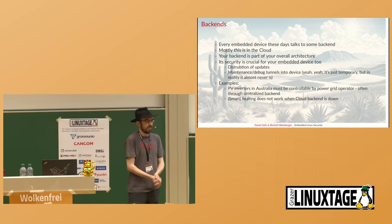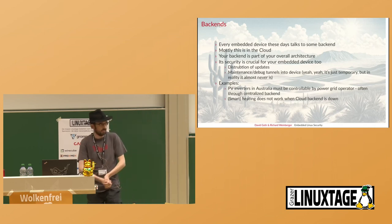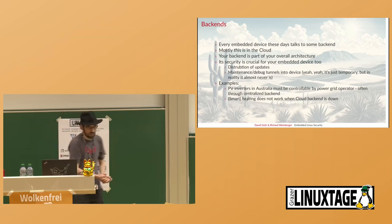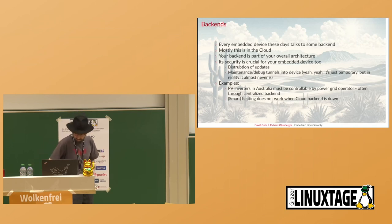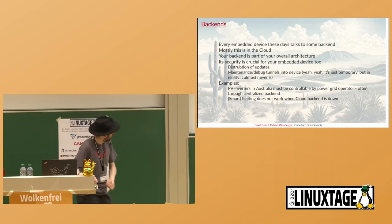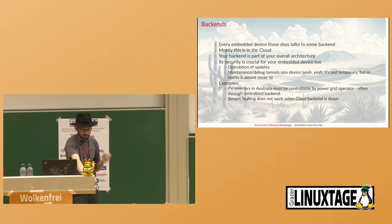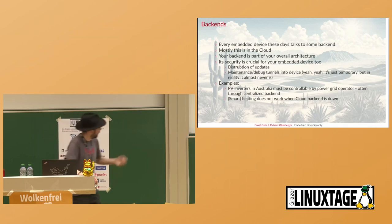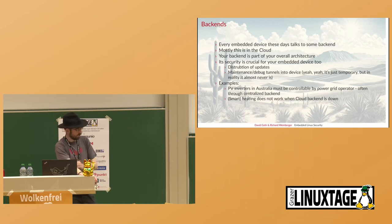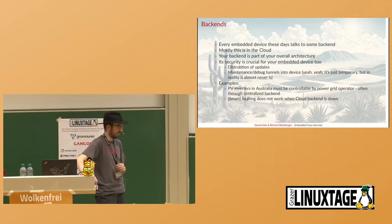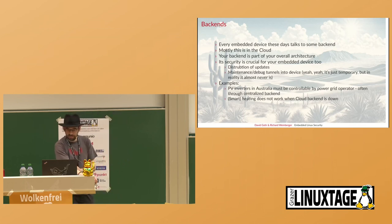Another thing is backends. These days almost every embedded device talks to a cloud backend, which is also part of the whole product. A vulnerable backend is a major risk. For example, in Australia the power grid operator requires you to be able to shut down your embedded device when there's a problem in the grid, and you cannot sell a photovoltaic device there without supporting it. You have to offer a backend with this feature and make sure only the authorized party can use it — not the bad guys. When your backend fails, the game is over.